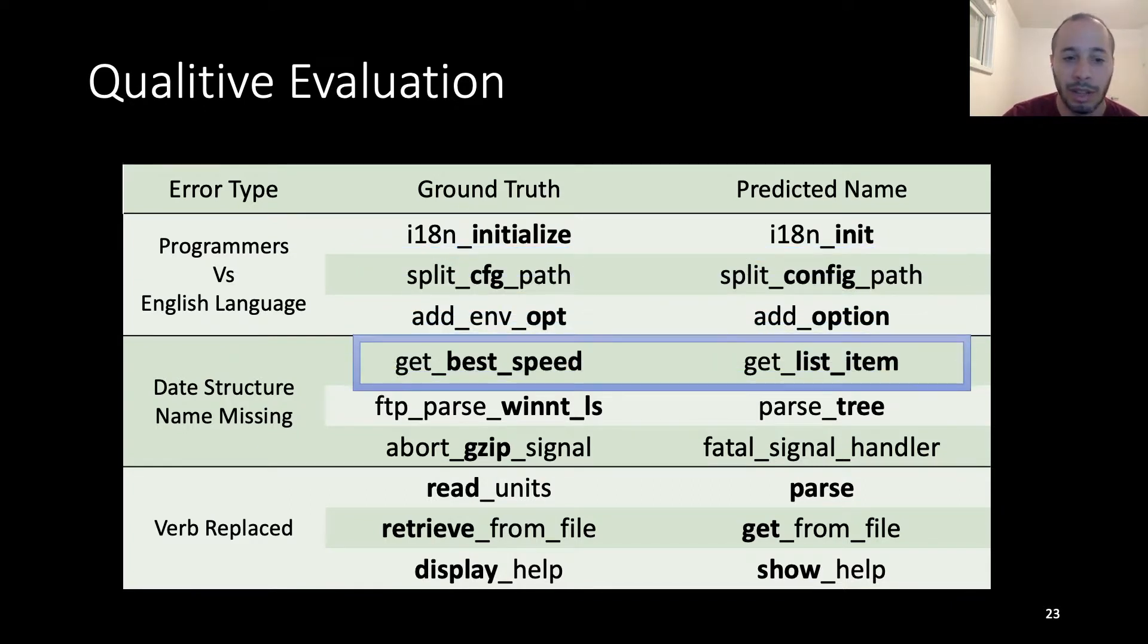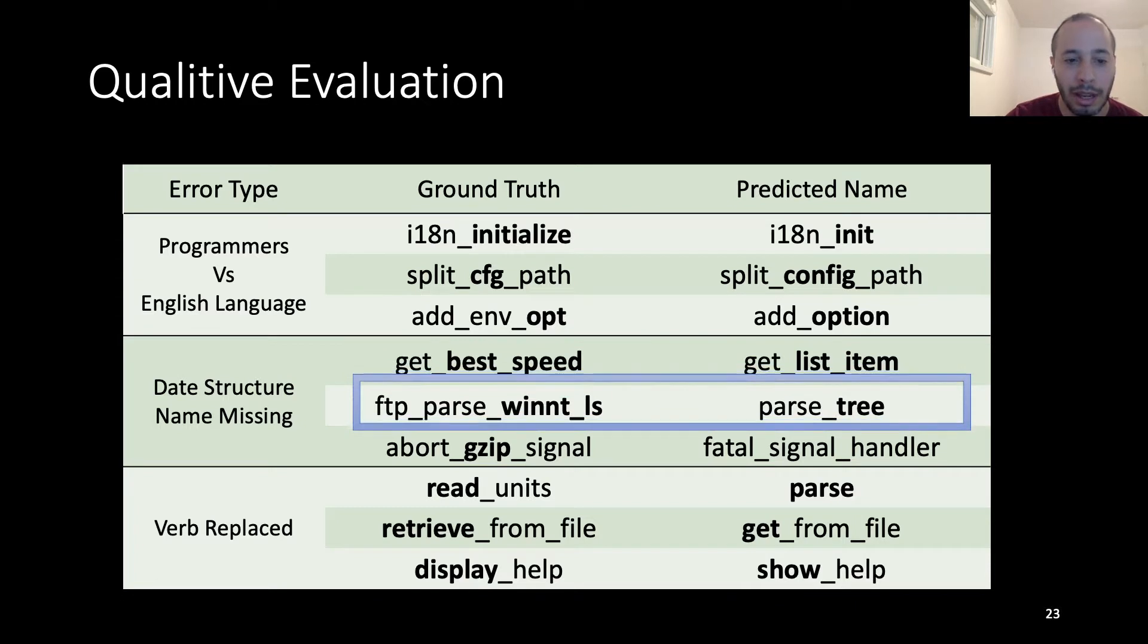The next group we call data structure name missing. In this case, the module was missing the name of the data structure being used by the programmer again and again. In this case, we see that the programmer gave the name get best speed, but the module had no idea that this list is actually a list of speeds, and so it predicted the get list item instead. A more complex example here is the ftp-parse-win-nt-ls, essentially parsing of the directory tree for the Windows system in an ftp connection, while the module only saw a parsing of a tree, and this is the predicted name.